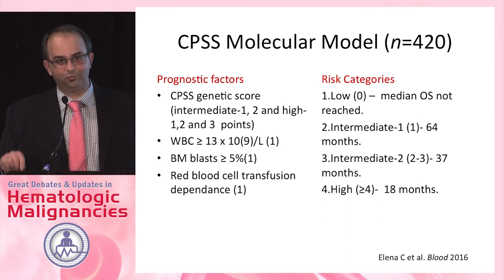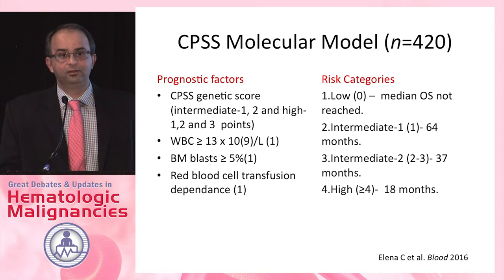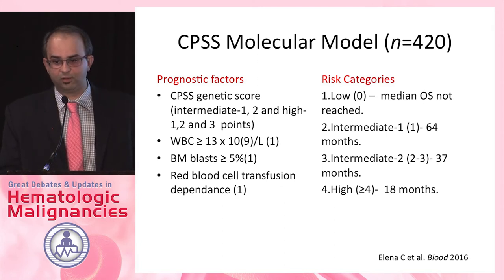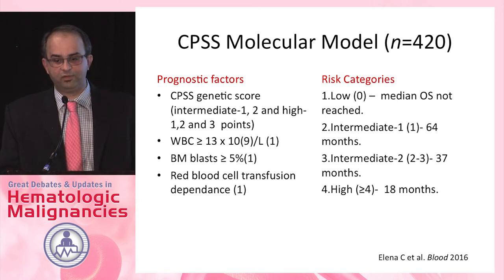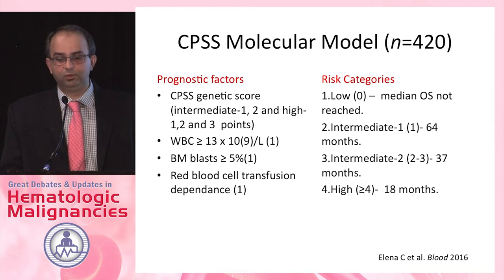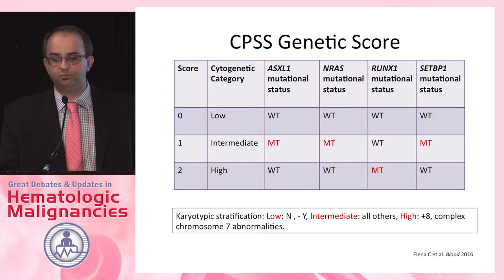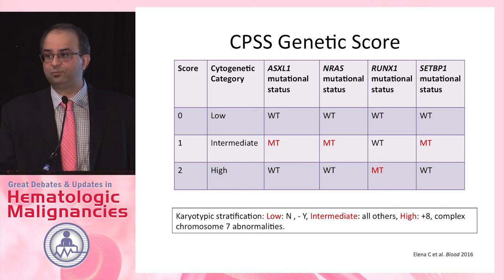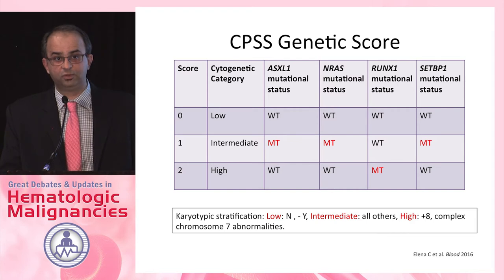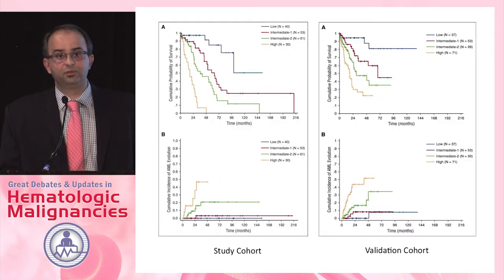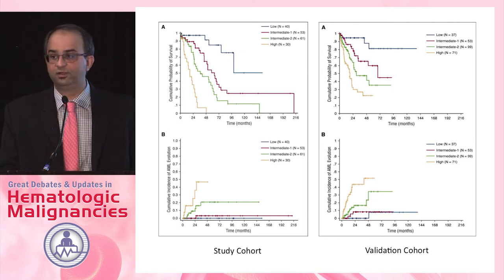Meanwhile, the Spanish group was also working on their model and came up with the CPSS molecular model, recently published in Blood. Many clinical parameters overlap between all three models — a proliferative phenotype with leukocytosis or monocytosis is clearly bad, as is anemia or red cell transfusion dependence. The CPSS was the only model where bone marrow blast made a difference. They also created a genetic score incorporating mutations in ASXL1, NRAS, RUNX1, and SETBP1. Based on cytogenetic stratification — where trisomy 8 is the most common cytogenetic abnormality in CMML — they computed a genetic score incorporated with clinical features, yielding a model that effectively stratified for both overall survival and leukemia-free survival.